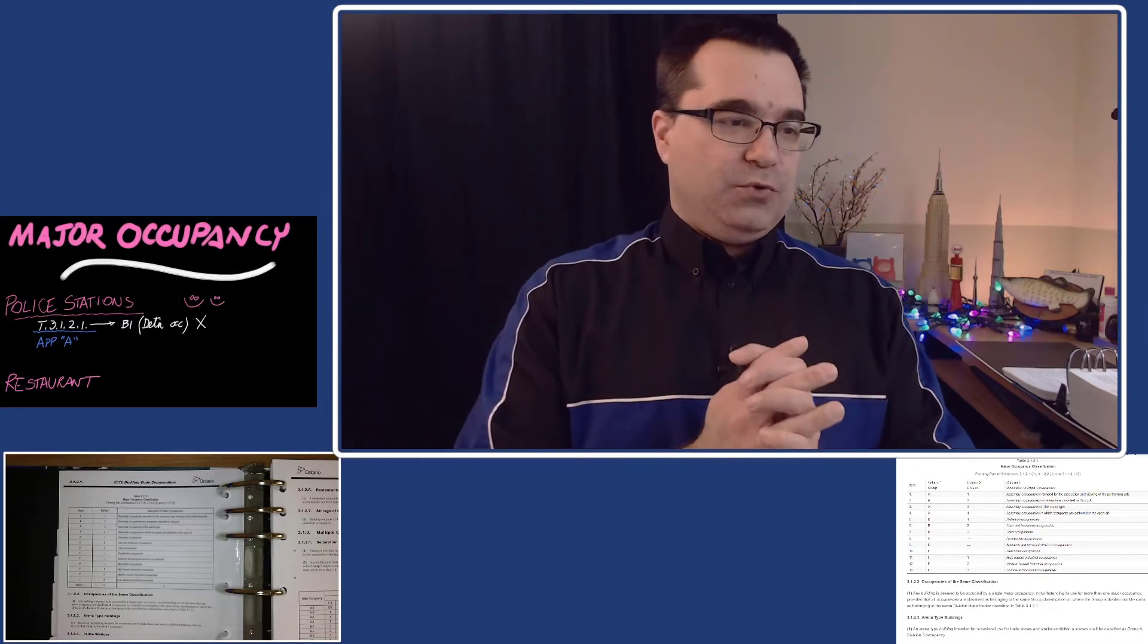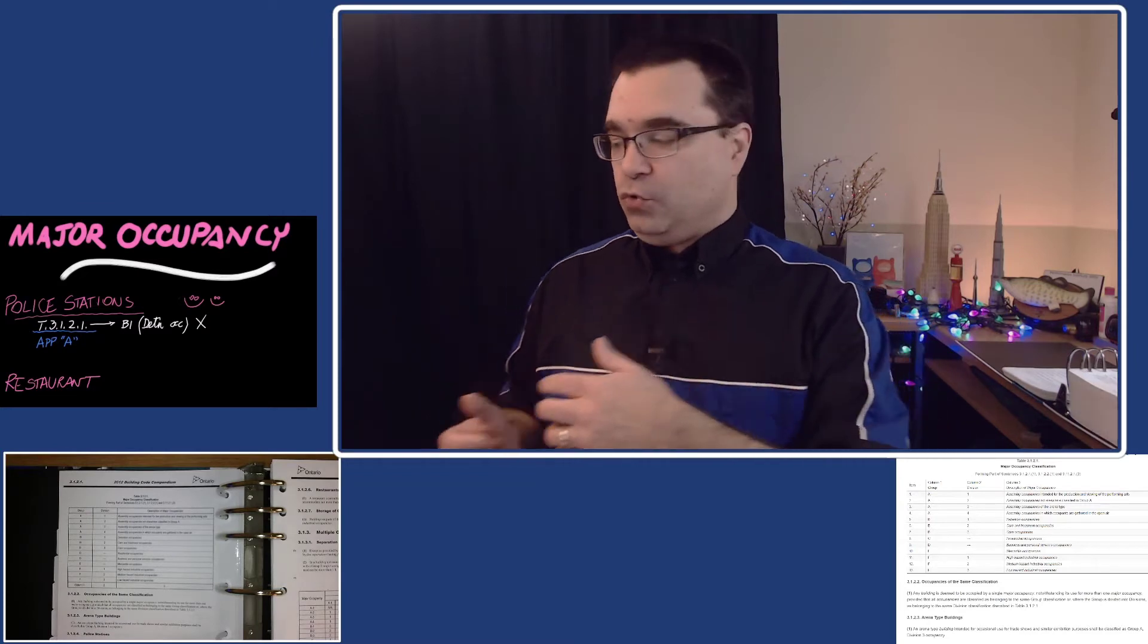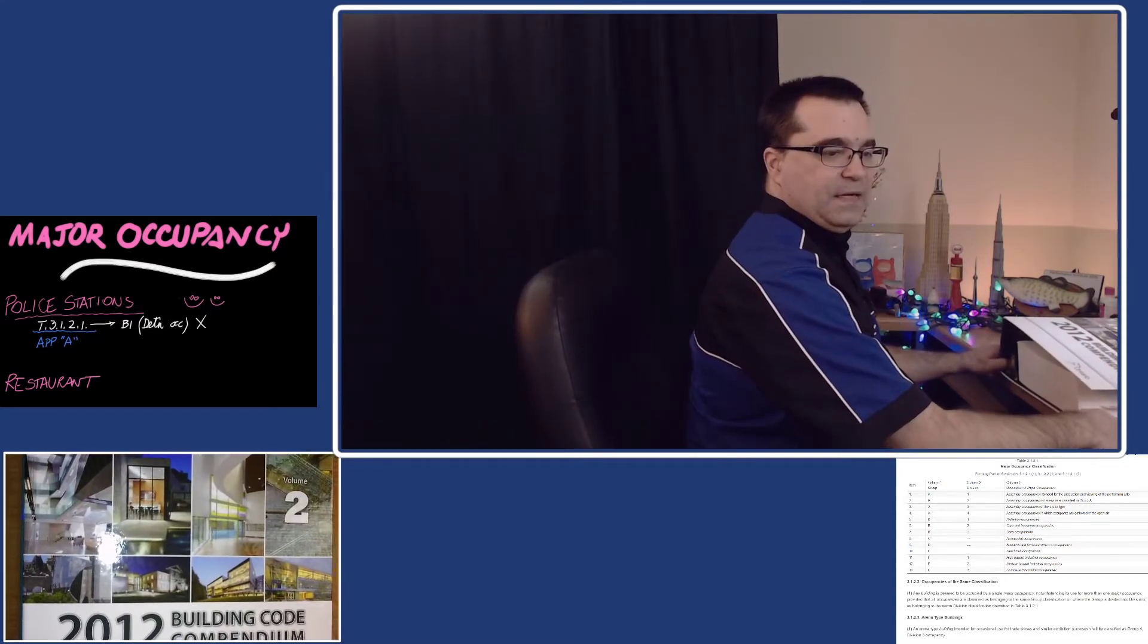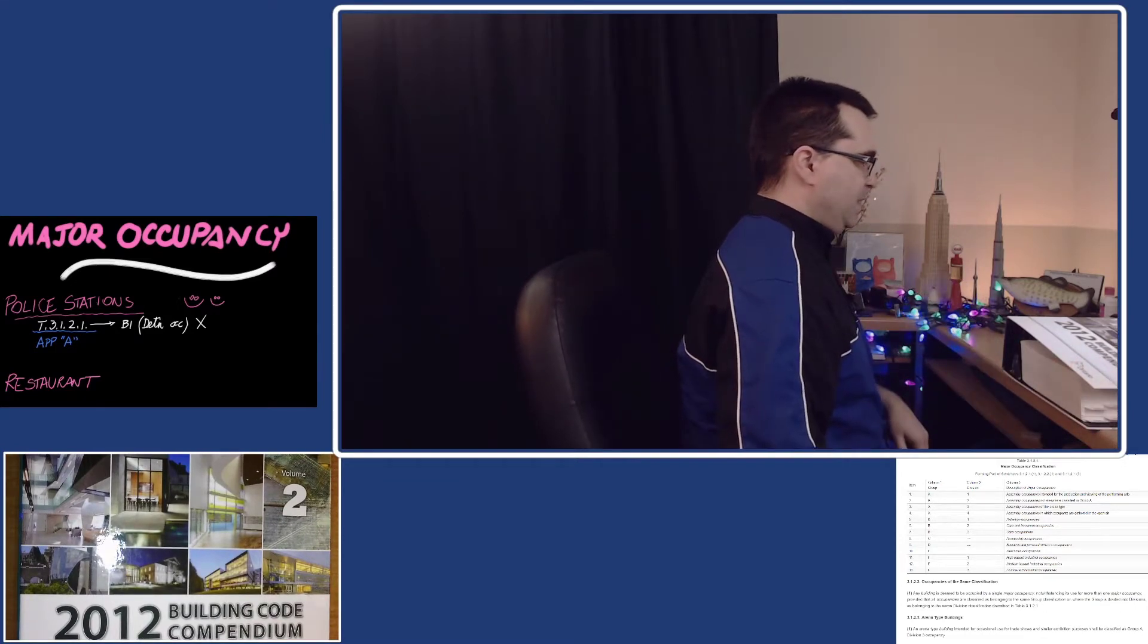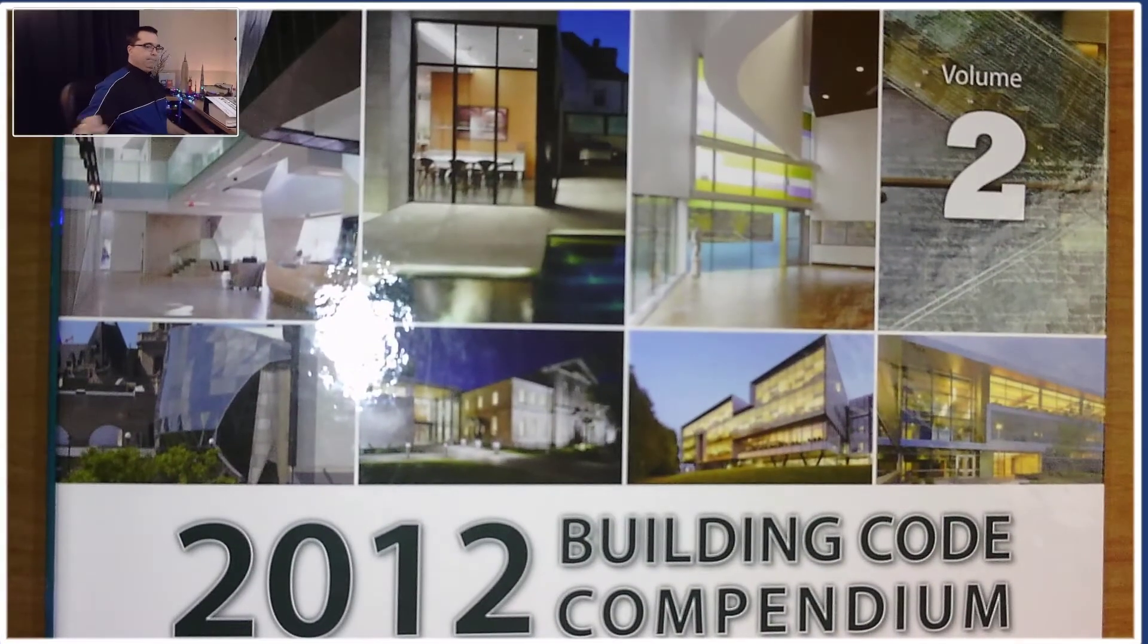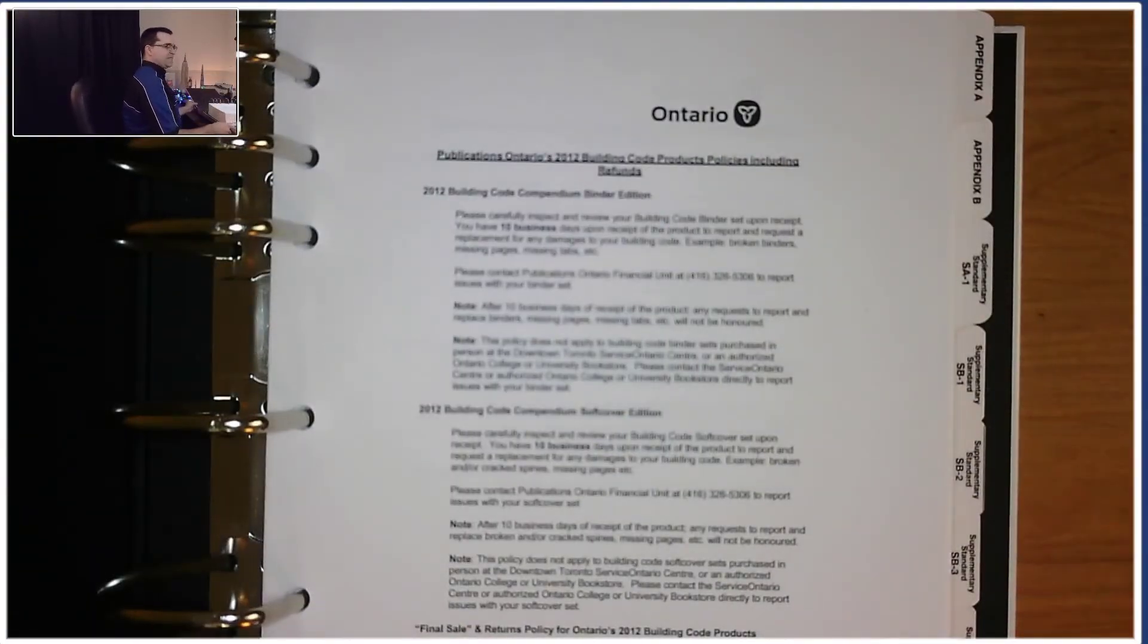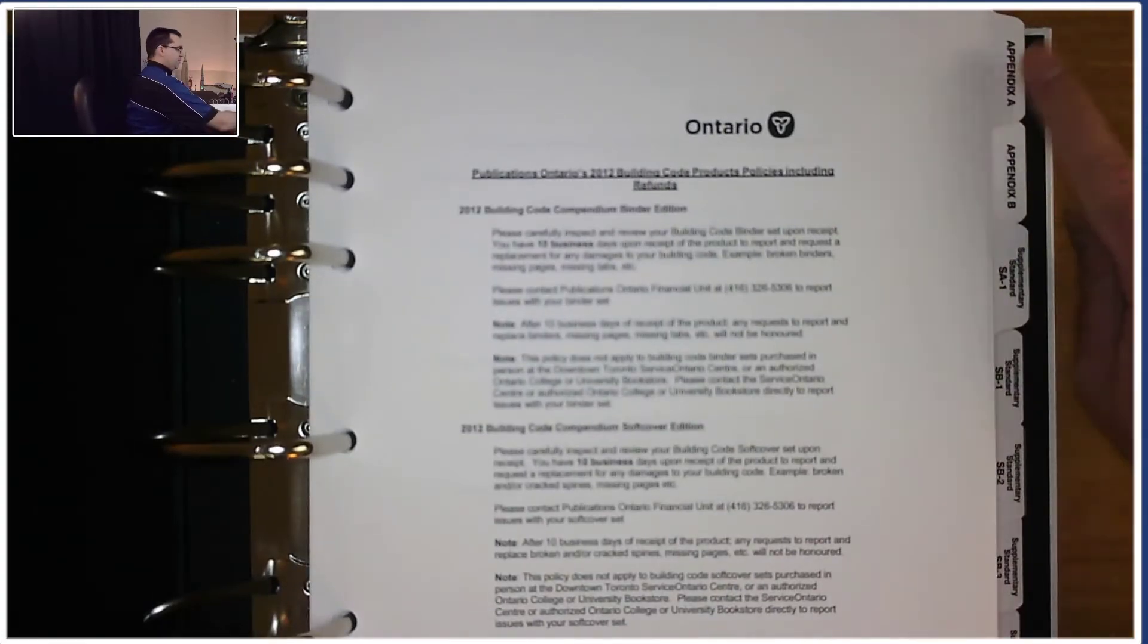That's what we're going to do right now. I claim that Appendix A is a better place to start to figure out the major occupancy rather than Table 3.1.2.1 in Division B Volume 1 Part 3. I'm going to get us Appendix A. Luckily for me, I have Volume 2 of the Building Code Compendium right here.